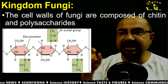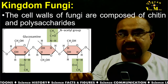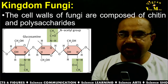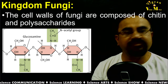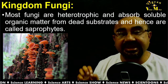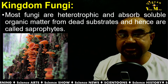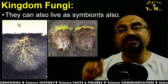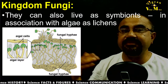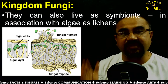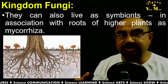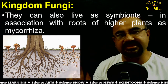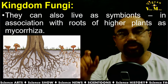The fungal cell wall is made up of chitin and polysaccharides. Most fungi are heterotrophic and absorb soluble matter from dead substrates — hence they are called saprophytes. Some depend on living plants or organisms, making them parasites. They can also live as symbionts — exemplified by the symbiosis of algae and fungi in lichens. When fungi associate with the roots of higher plants, it is called mycorrhiza.